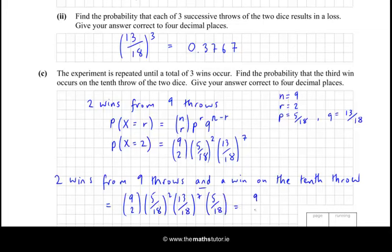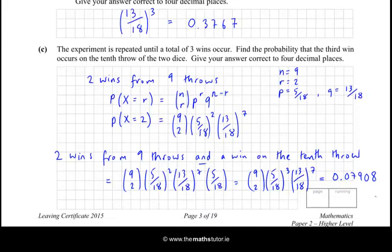And you can tidy that up a bit, so it's 9 choose 2, 5 over 18 cubed, 13 over 18 to the power of 7. And we need to calculate that to 4 decimal places. So we punch all that into the calculator. And we get 0.07908, so that would be 0.07908.